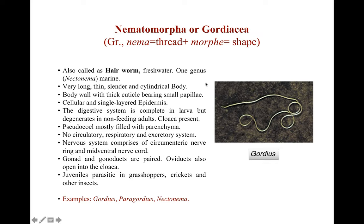Now Nematomorpha, also called Gordiasia. Neme means thread, morphe means shape — so they are thread-shaped worms, also known as hairworms. They are usually freshwater. They have a very long, thin, slender, and cylindrical body.